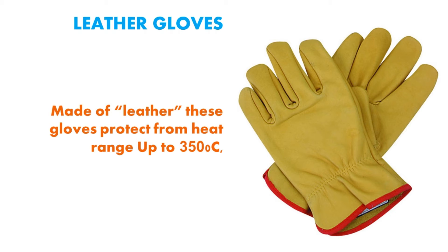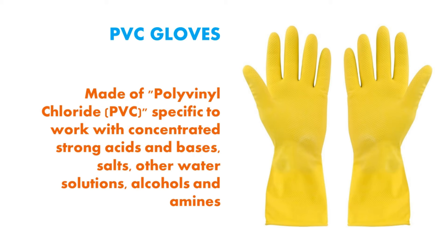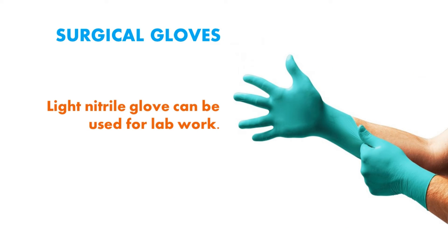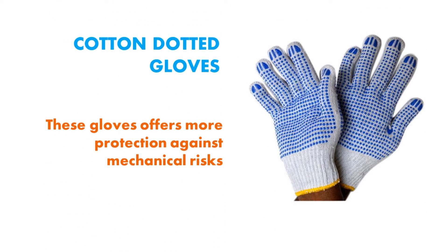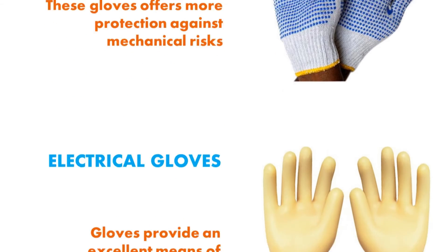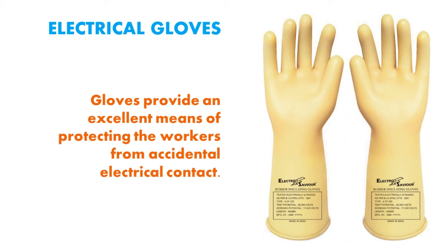Leather hand gloves are made up of leather and protect from heat up to 350 degrees centigrade. PVC hand gloves are made up of polyvinyl chloride and are specific to work with concentrated strong acids and bases, salts, other water solutions, alcohols, and amines. Surgical hand gloves — light nitrile gloves — can be used for laboratory work activities. Cotton dotted hand gloves offer smooth protection against mechanical risks. Electrical hand gloves provide excellent protection for workers from accidental electrical contact.